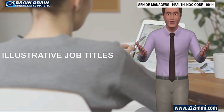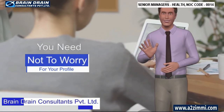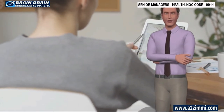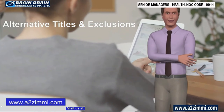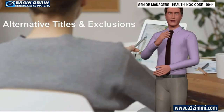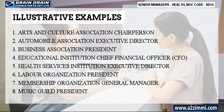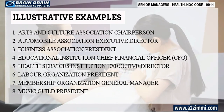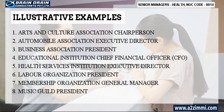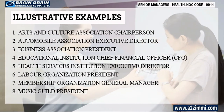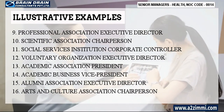Illustrative Job Titles and Exclusions: Every job role or employment can have multiple profile titles. If you are not able to find the exact job title for your profile, you need not worry. This section is a list of titles commonly used in the labor market. Illustrative titles for the profile of Senior Managers, Health, Education, Social and Community Services and Membership Organizations include: Arts and Culture Association Chairperson; Automobile Association Executive Director; Business Association President; Educational Institution Chief Financial Officer. The list is quite large, so you can pause this video to read all the alternative profile titles.